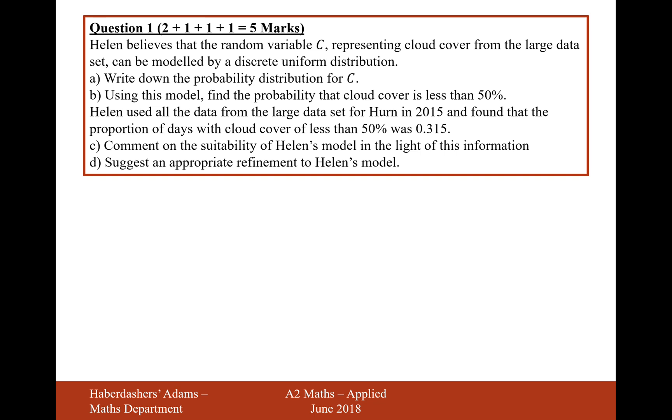Write down the probability distribution for C. Well, first of all, a discrete uniform distribution, if you think uniform, what does uniform involve? It means everything being the same, so that means that the probabilities are going to be all the same. And what outputs can cloud cover have?